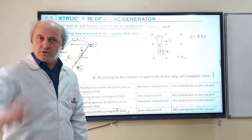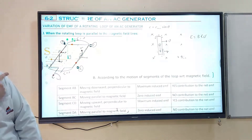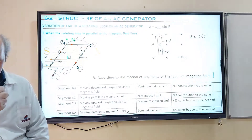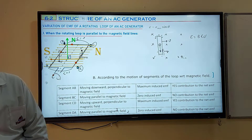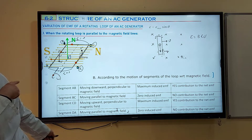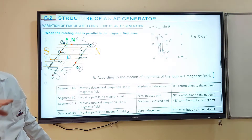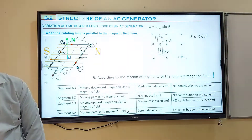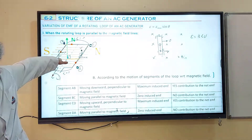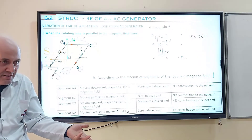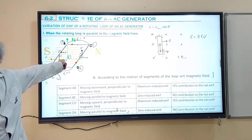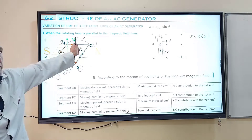There are three important things to know. First: when the loop is parallel to the magnetic field lines, the induced EMF is maximum. The segments AB and CD are moving perpendicular — crossing the field lines — while the loop itself is parallel. The magnetic force acting on the electrons is maximum at this orientation, which is why the induced EMF is maximum.